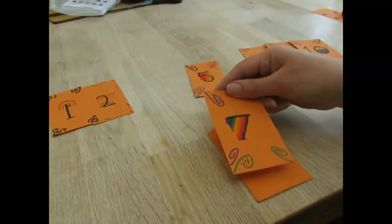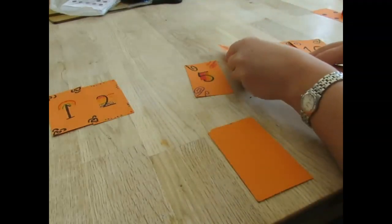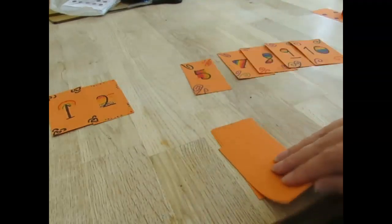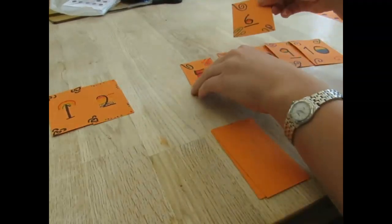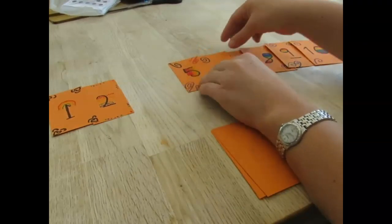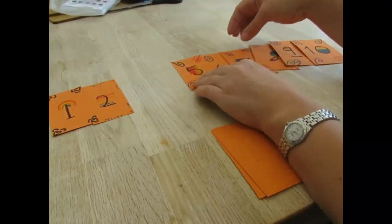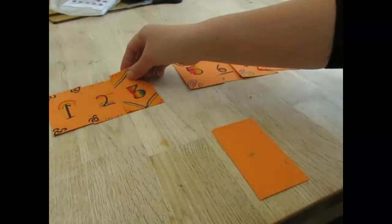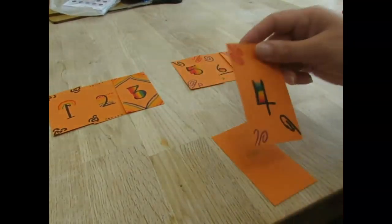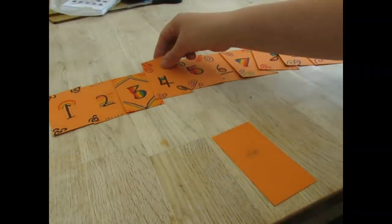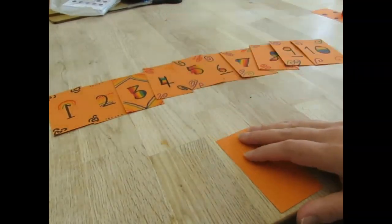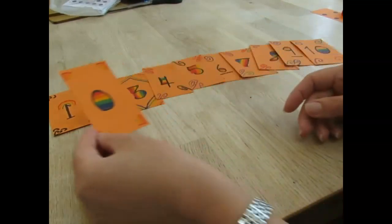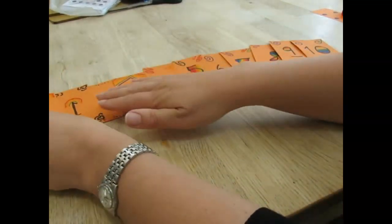Seven. I know that is one less than eight. Six. That goes between my seven and my five. Three goes next to my two. My four goes between my three and my five and I'm guessing this one will hopefully be zero and that goes right at the start of my number line.